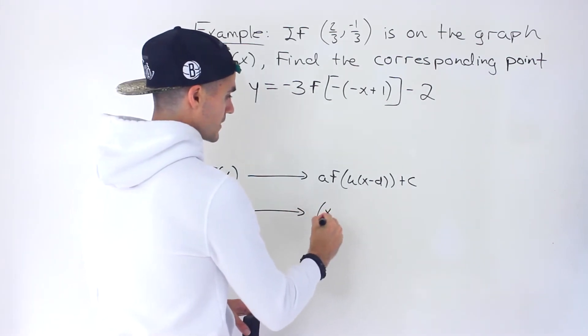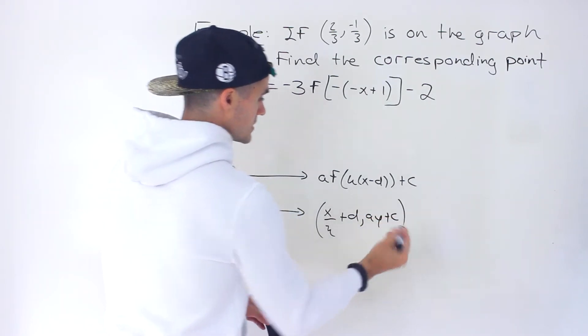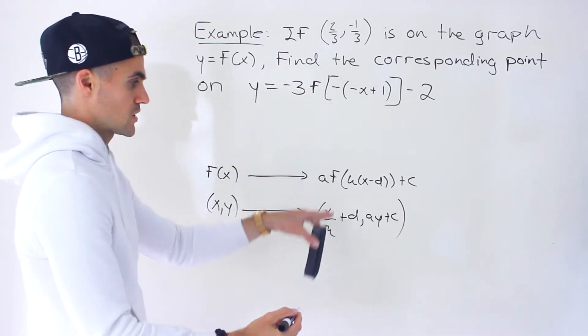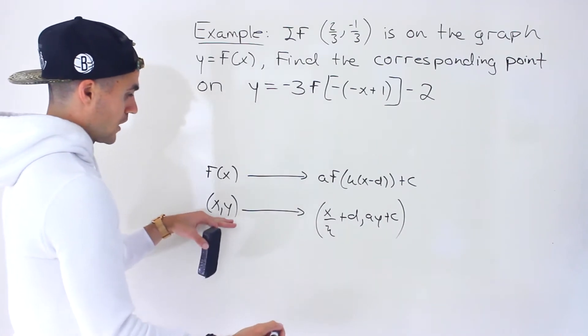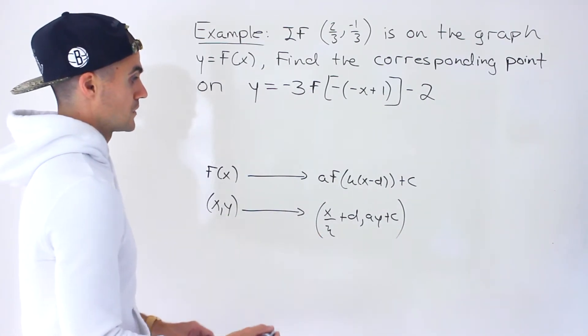x over k plus d, and then ay plus c, like that. We would take those transformation values and run those coordinates on the parent function through this formula.